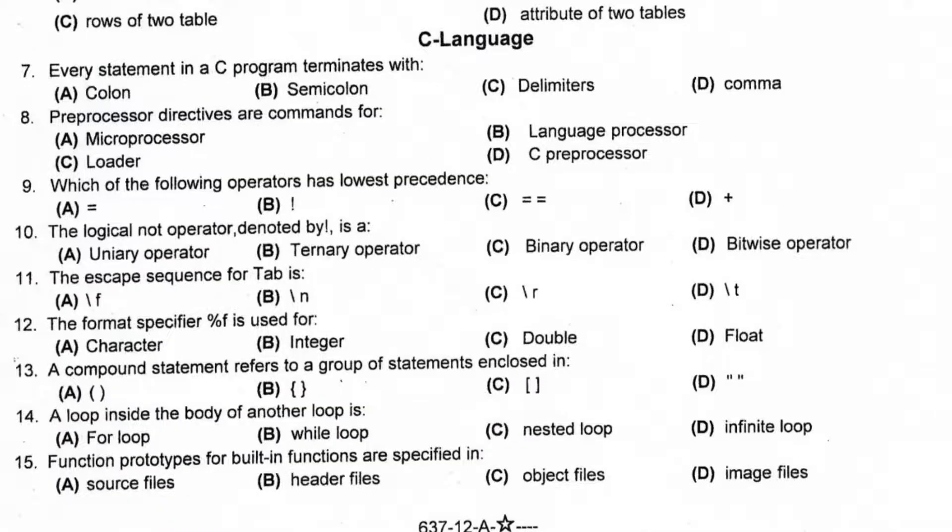Every statement in a C program terminates with semicolon. Preprocessor directives are commands for language processor. Which of the following operator has lowest precedence? Equal. The logical NOT operator denoted by is a unary operator. The escape sequence for tab is option D, slash T. The format specifier %f is used for float.